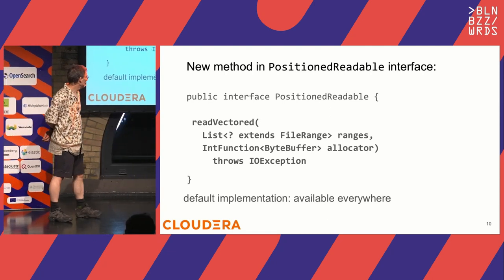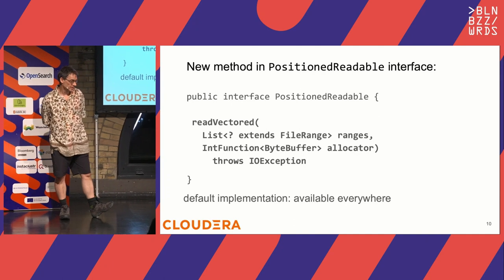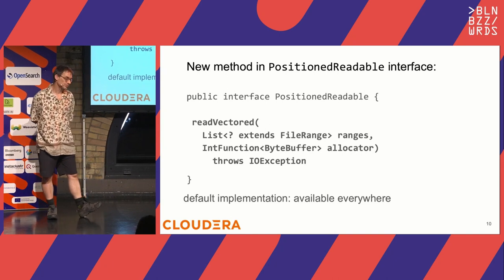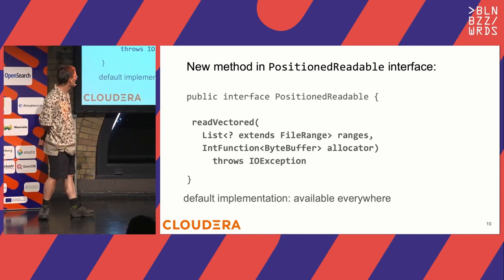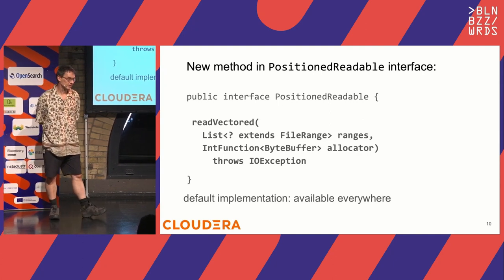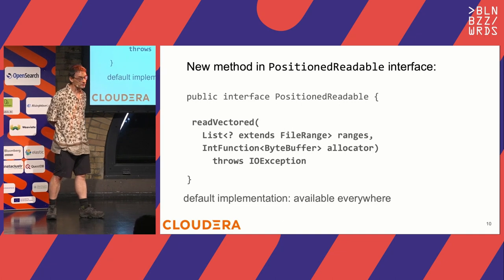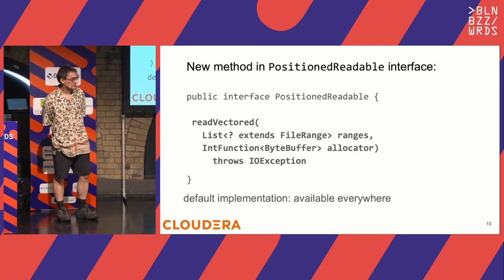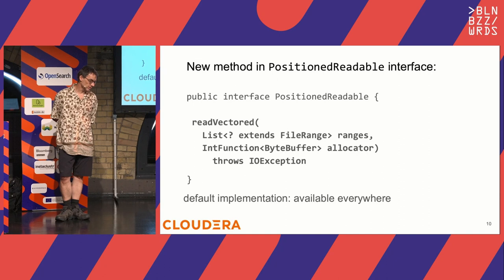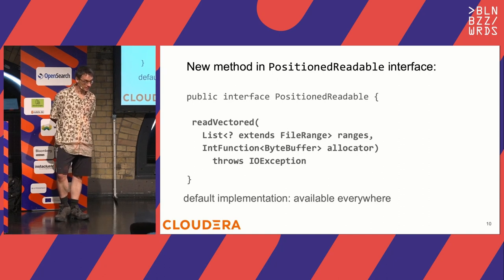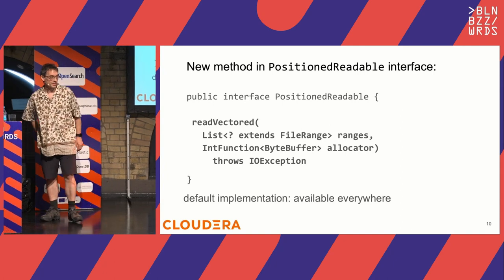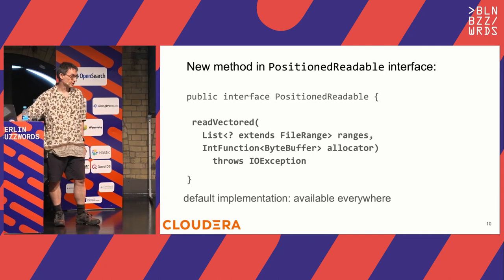The goal is an API that works as well as current single sequential range reads in the worst case, and is significantly optimized for the underlying store in the best case. All we've done is added a new method to the Hadoop PositionedReadable interface that lets you specify I want to read at this offset, this much data, into this buffer. Now you provide a list of file ranges and a function which supplies the buffers — a memory allocator. We have a default implementation so every class, every library, even third-party libraries like Google's that implement this API, automatically get this new method.